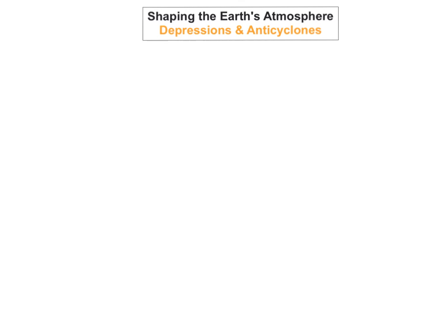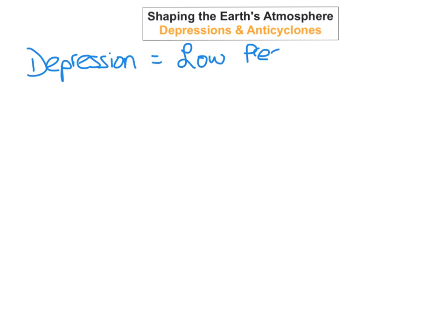So the first one is a depression. A depression is an area of low pressure. And an anticyclone is an area of high pressure.